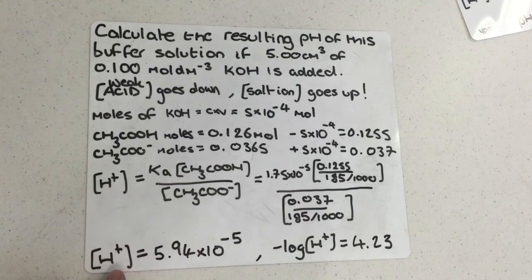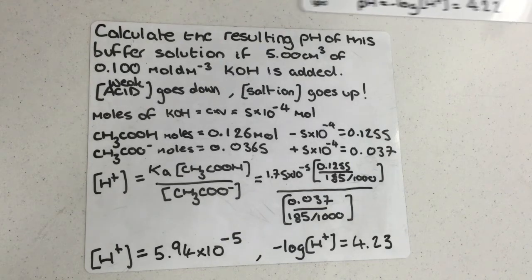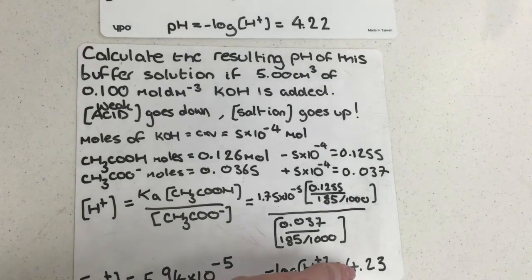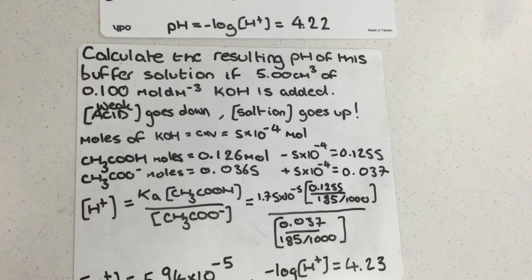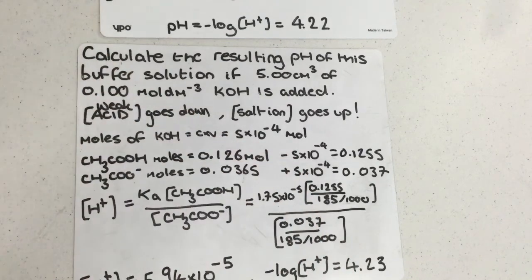This gives an H+ ion concentration of 5.94 × 10⁻⁵, which placed into the minus log expression gives a pH of 4.23. Comparing the two pHs: after adding the alkali the pH has become less acidic, which is what we would expect because some of the acid has reacted. We've gone from 4.22 to a less acidic pH value of 4.23.